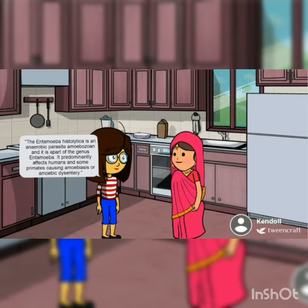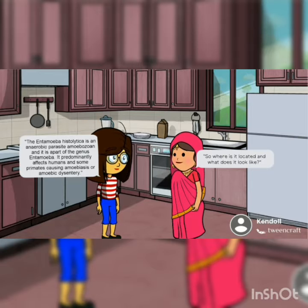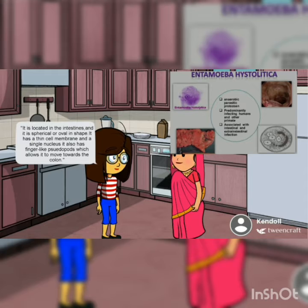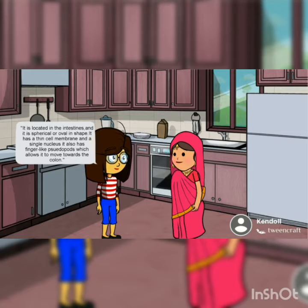The Entamoeba histolytica is an anaerobic parasite, amoebozoan, and it is part of the genus Entamoeba. It predominantly affects humans and some primates, causing amoebiasis or amoebic dysentery. So where is it located and what does it look like? It is located in the intestines and it is spherical or oval in shape. It has a thin cell membrane and a single nucleus. It also has finger-like pseudopods, which allow it to move towards the colon.